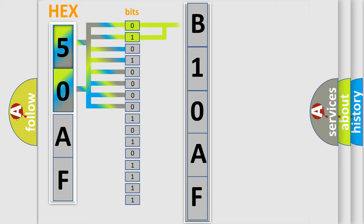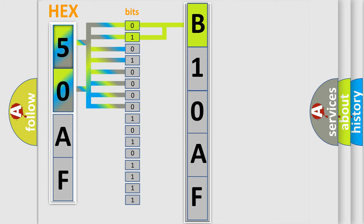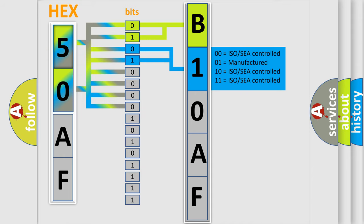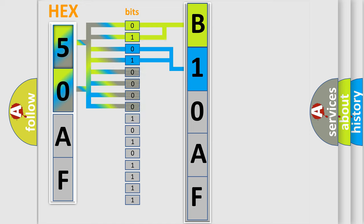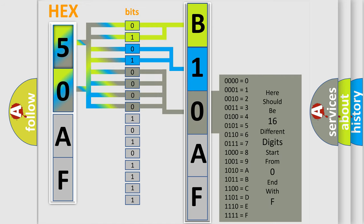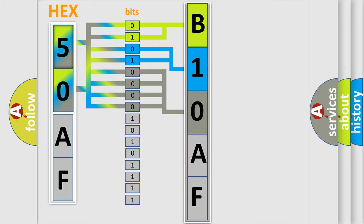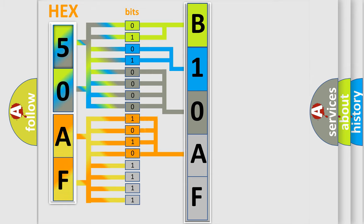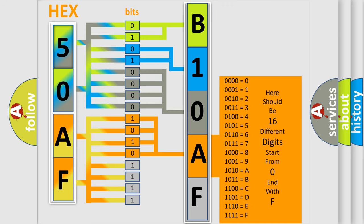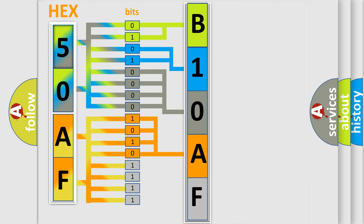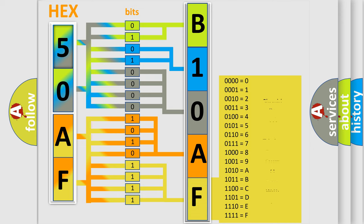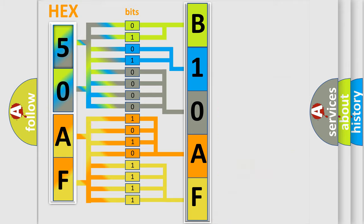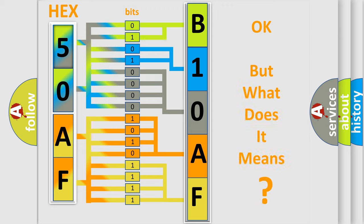By combining the first two bits, the basic character of the error code is expressed. The next two bits determine the second character. The last bits of the first byte define the third character of the code. The second byte is composed of a combination of eight bits — the first four bits determine the fourth character, and the last four bits define the fifth character. A single byte conceals 256 possible combinations. This is how the diagnostic tool translates received information into a more comprehensible format.